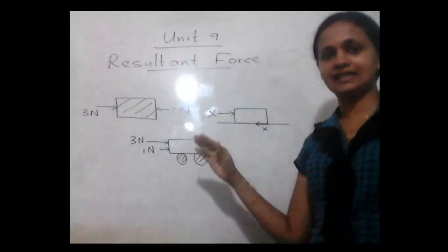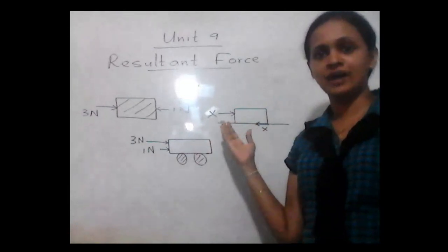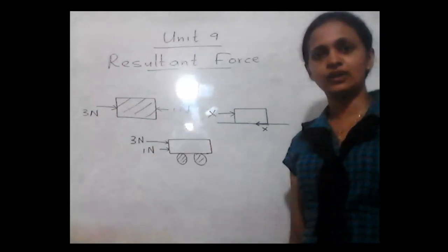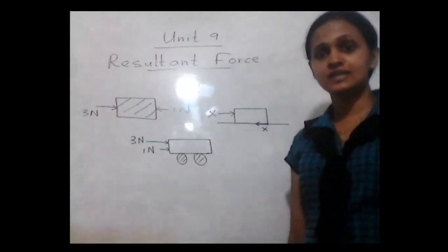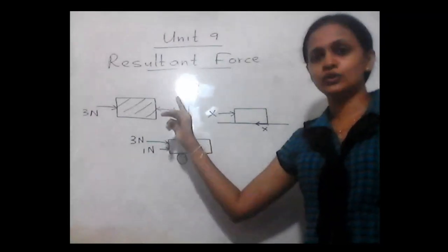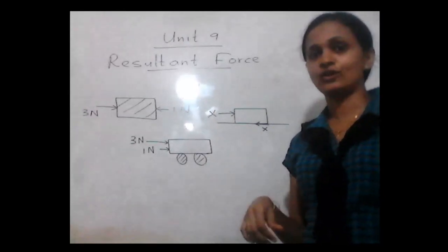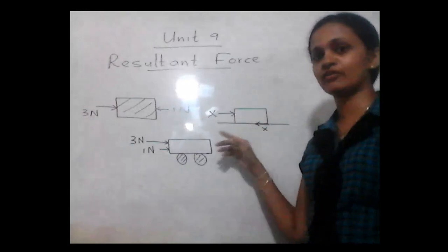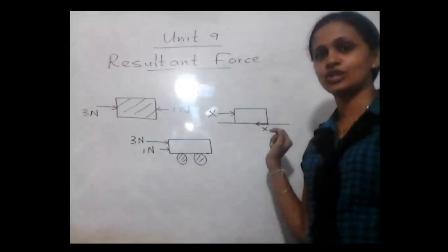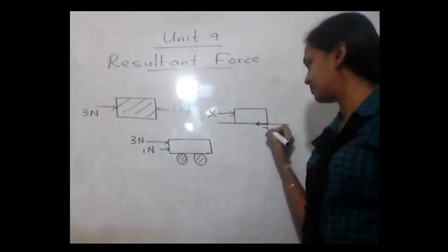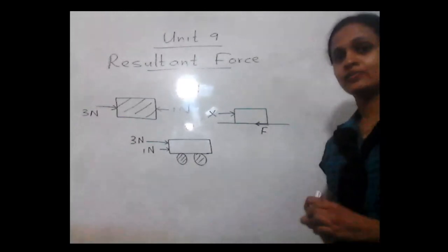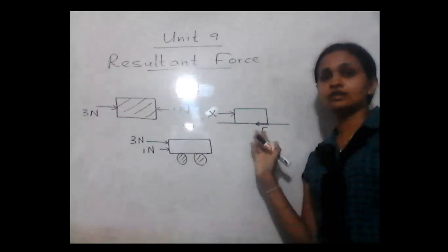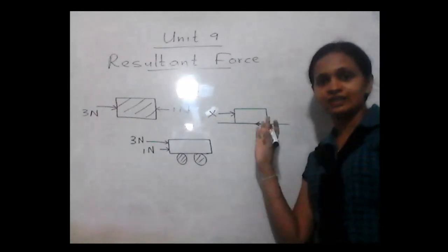Here I have shown you different instances in which different forces are applied on different objects. In the first instance, you can see two opposite forces applied on a box — the two forces are applied in opposite directions. The box will move if there is an unbalanced force acting on it. In the next instance, a force X is applied on an object on a surface, and against the motion a friction force is applied. The difference between the applied force and the friction force will be the resultant force on this object.